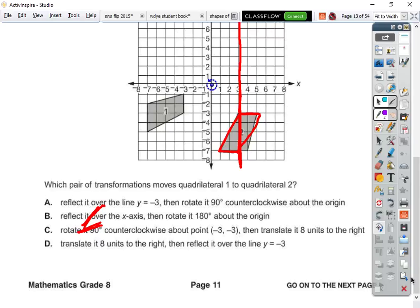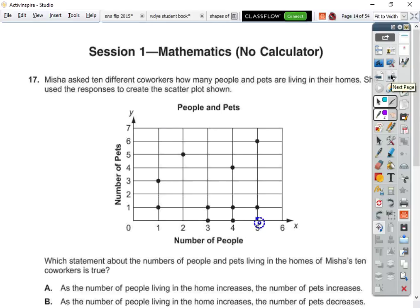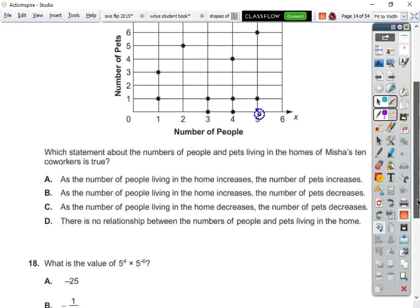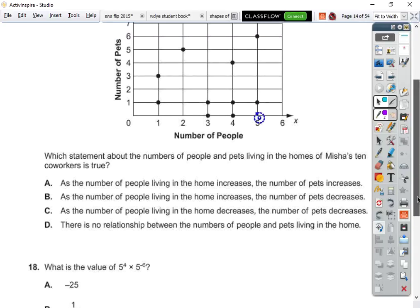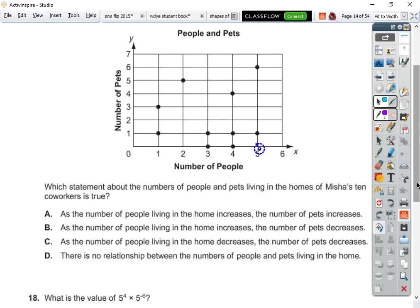All right. Moving on. Misha asked 10 different co-workers how many people and pets are living in their homes. She used the responses to create the scatterplot shown. This would be people and pets. Which statement is true about the number of people and pets living in homes of the co-workers? As the number of people living in the home increases, the number of pets increases. Well, I don't know about that because as we have three, four and five, we have this box here.